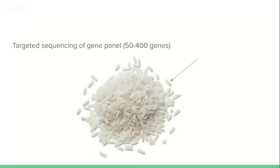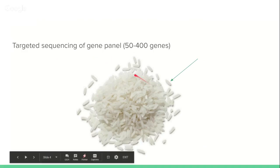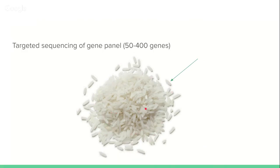How does it compare to targeted sequencing of a gene panel? When we say we've done targeted sequencing of a panel of 50 or 400 cancer genes, that would be like sequencing a grain of rice. In volume, you can fit as many grains of rice on a sequencing run as compared to grapes for exome sequencing and oranges for whole genome sequencing.